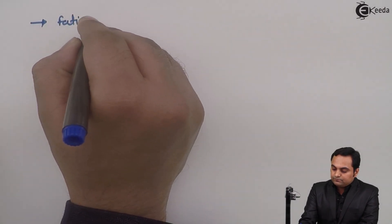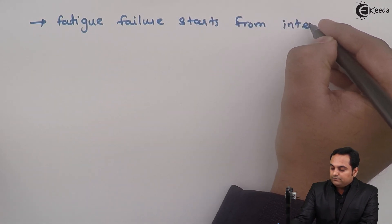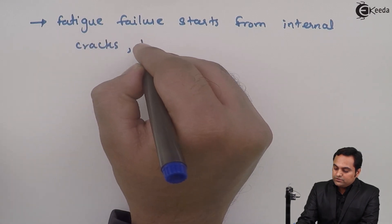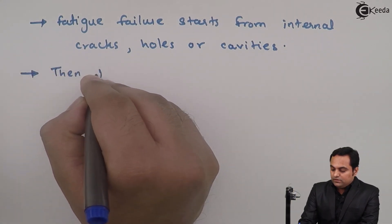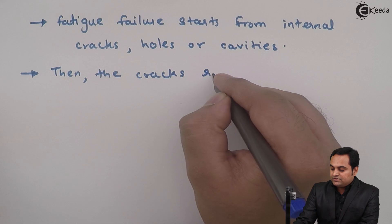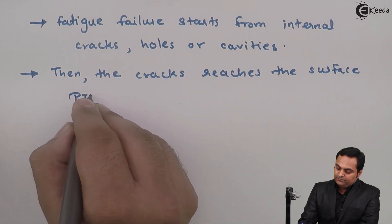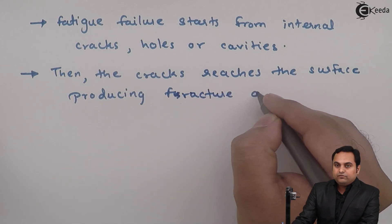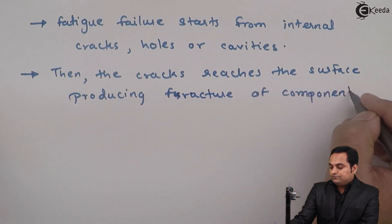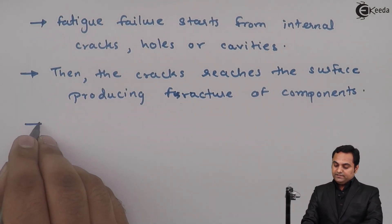Fatigue failure starts from internal cracks, holes, or cavities. These cracks then reach the surface, producing fracture of the component structure.